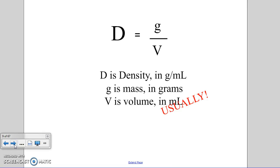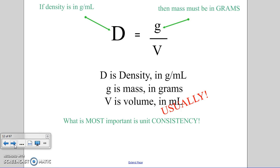Usually, most often, doesn't always have to be, but what does matter is that we are consistent with our units. For example, if density is measured in grams per milliliter, the mass that we use must be in grams, not kilograms or pounds, and the volume must be in milliliters. We have to have matching units.